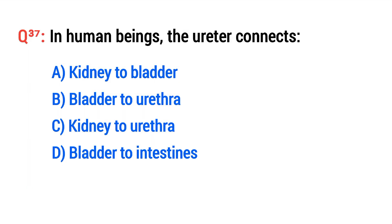Question thirty-seven: In human beings, the ureter connects what? The right option is A: Kidney to bladder.